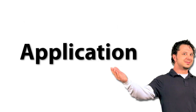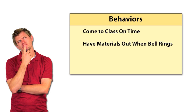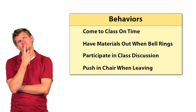Now let's see if we can apply the principles of behaviorism to help solve Teacher Tony's problem. First, Teacher Tony needs to decide what specific behaviors he wants his students to exhibit. Teacher Tony decides he would like students to show four behaviors: come to class on time, have materials out when the bell rings, participate in classroom discussions, and push in their chair when they leave class.